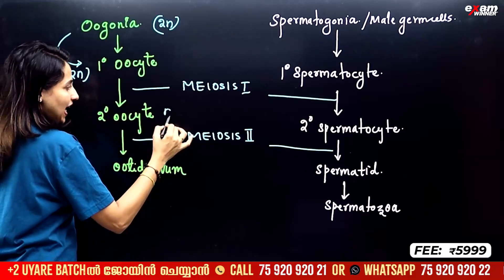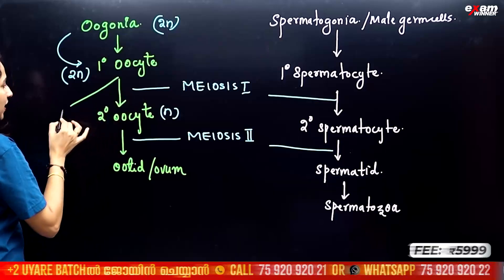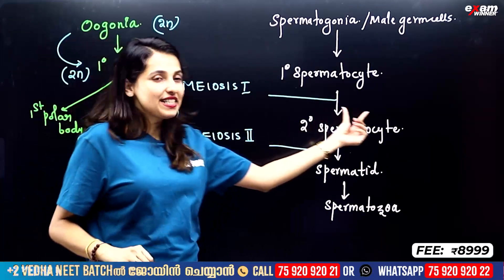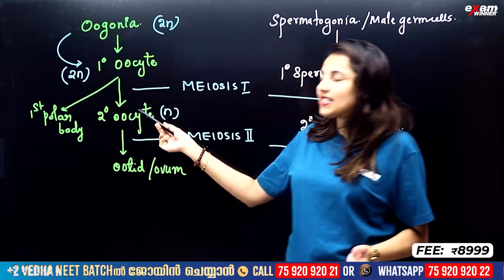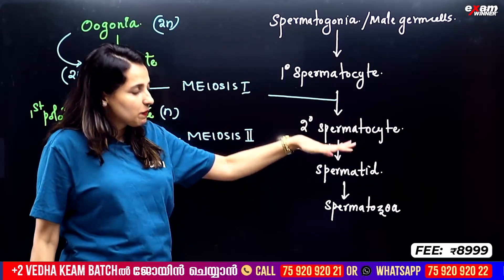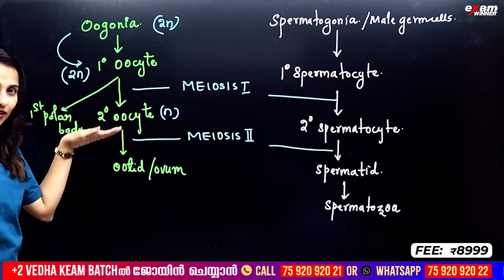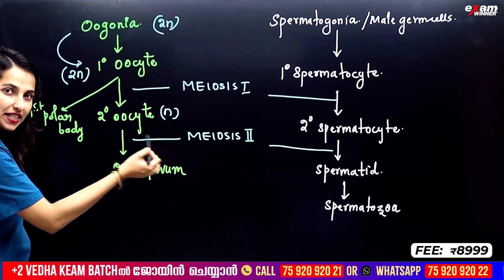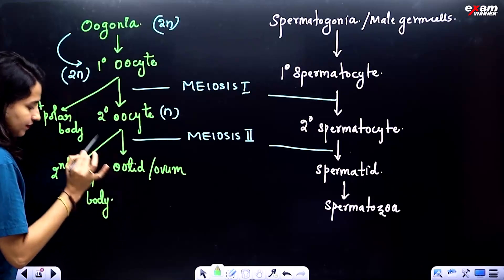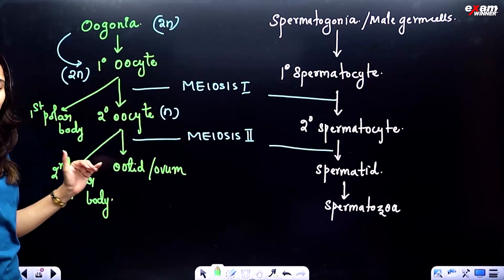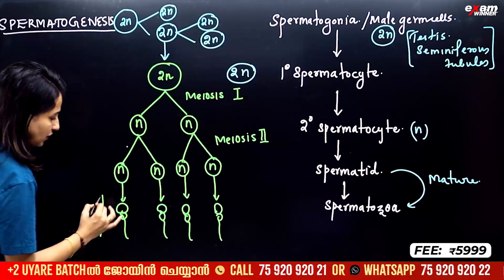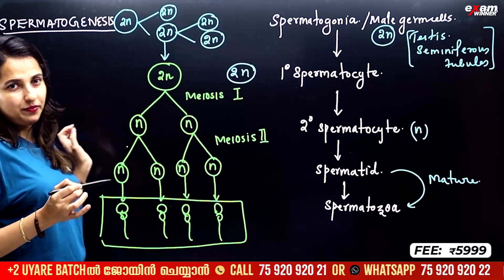In the first meiotic division, females produce a secondary oocyte, which is haploid, and also a first polar body — this is extra. Males produce two secondary spermatocytes, while females produce one secondary oocyte and one first polar body, both haploid. Then from the secondary spermatocyte we get spermatids; from the secondary oocyte we get an ootid and also a second polar body. For sperm, there are four spermatids from one primary spermatocyte — that's the key difference.